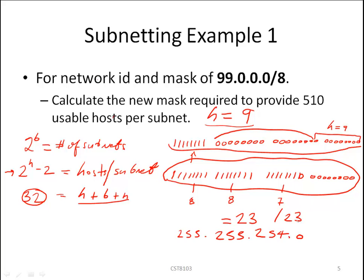Now an alternate way of determining what our new mask is is simply subtract 9 from the original number of host bits. We only need 9 so we have 15 bits that we can give away or transform into network bits. So by transforming 15 host into network bits we've added 15 to the original. Recall at the top here we have a slash 8 so 15 plus 8 equals 23.